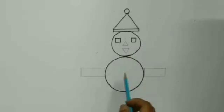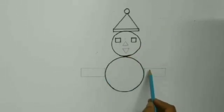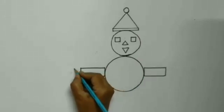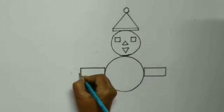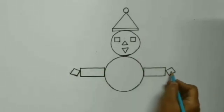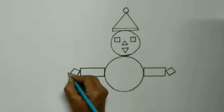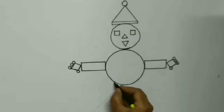Make arms on both sides of the joker with the help of rectangles. For the hands, draw two small squares on the ends of these rectangles. For fingers, make small circles on both these squares.